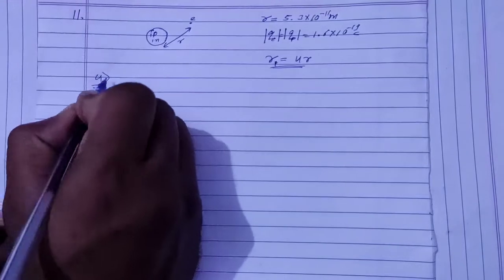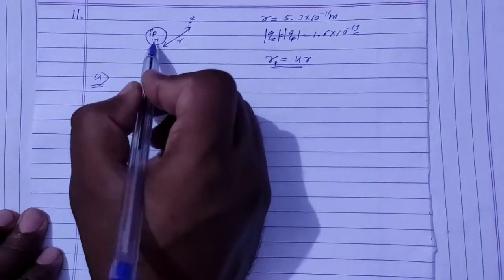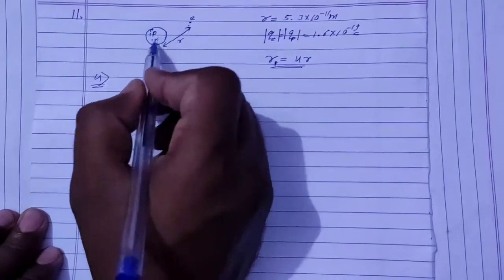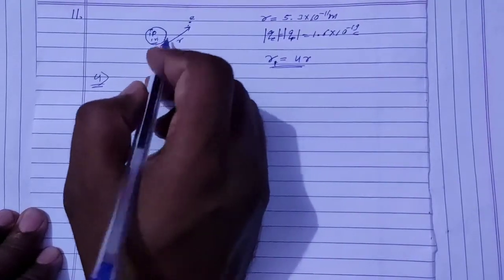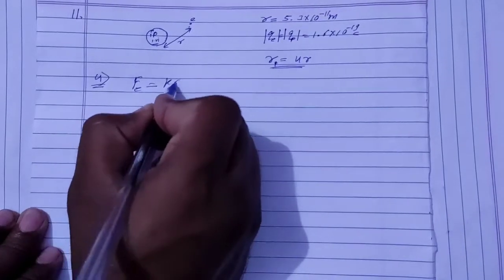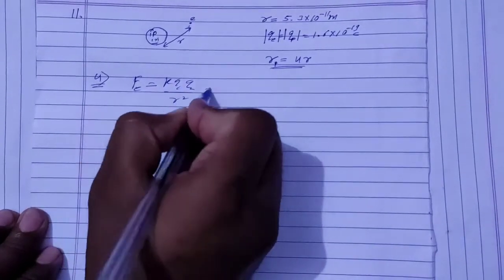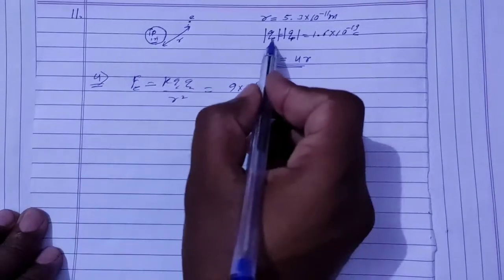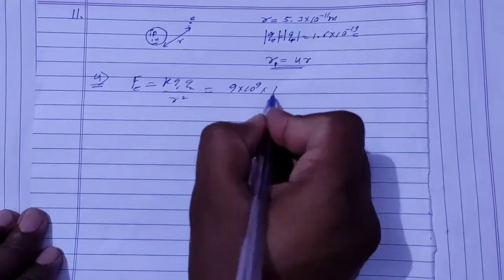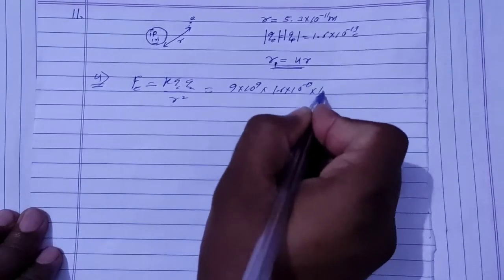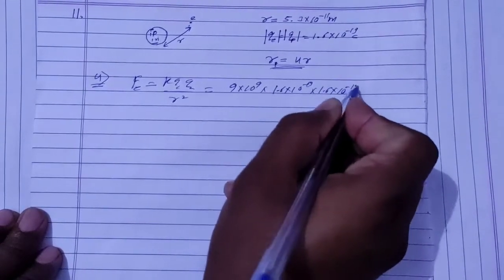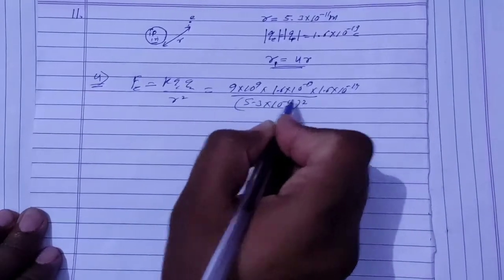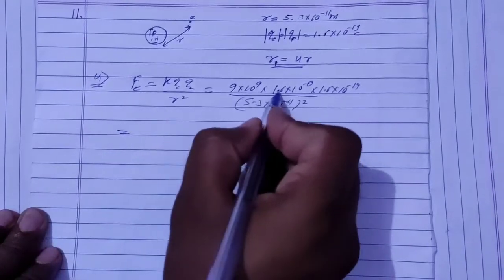For the first situation, the force between the electron and proton is an attractive electrostatic force. The Coulomb force formula is F = KQ1Q2 / R². Here K = 9×10⁹, and the charges are those of the proton and electron. The separation is 5.3×10⁻¹¹ meters squared in the denominator.